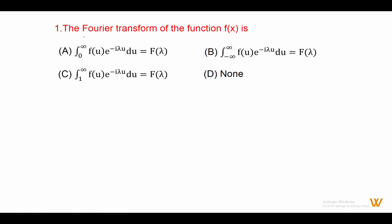First MCQ: the Fourier transform of function fx is — meaning the definition of Fourier transform. The definition is: integration from minus infinity to plus infinity of f(u) e raised to minus i lambda u du, equal to F(lambda). So the answer is option B.